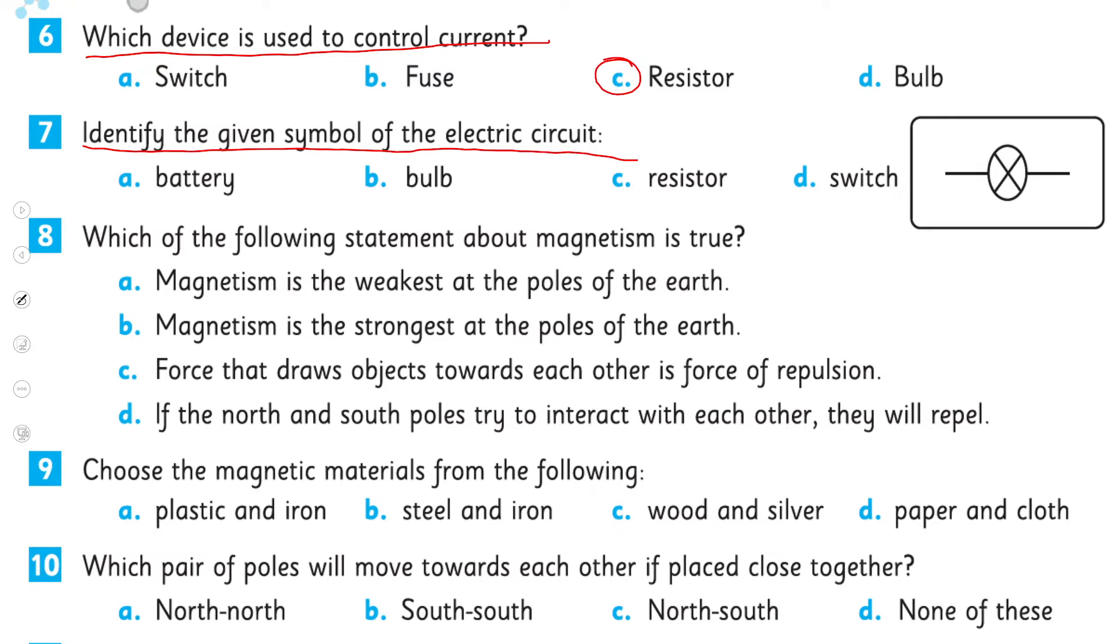Identify the given symbol of the electric circuit. So that is a bulb, battery, resistor, or switch. So that is a bulb. Which of the following statement about magnetism is true? Magnetism is the weakest at the poles of the earth, magnetism is strongest at the pole of the earth, force that draws objects towards each other is force of repulsion, if the north and south poles try to interact with each other they will repel. So number A is the correct option. Rest are the wrong ones.